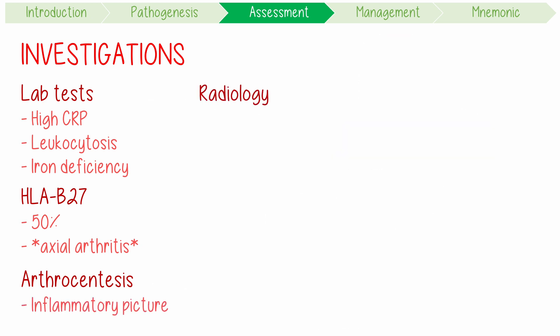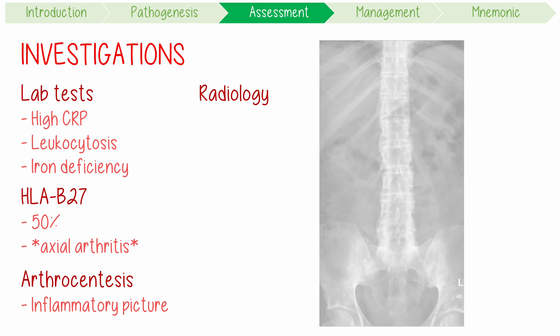Radiologically, in patients with axial disease, radiographs of the spine and pelvis might show typical features of ankylosing spondylitis, like bamboo spine.